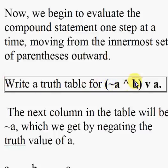To write a truth table for (~a ^ b) v a, we're going to start within the parentheses. First, we'll evaluate not-a, then we will do not-a and b, and lastly we will do this whole thing in parentheses or a.